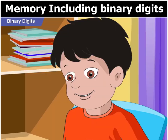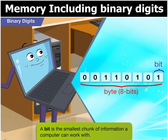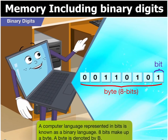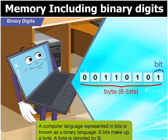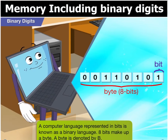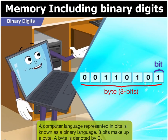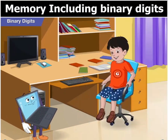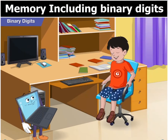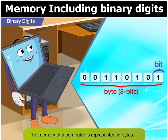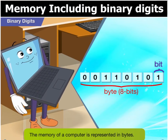What is a bit? A bit is the smallest chunk of information a computer can work with. A computer language represented in bits is known as a binary language. Eight bits make up a byte. A byte is denoted by capital B. So one byte is equal to eight bits. That's where the term bytes comes from.